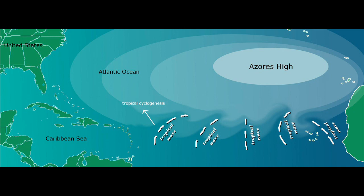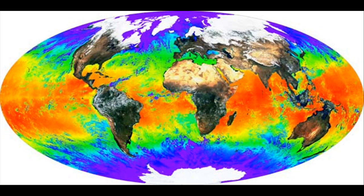Tropical cyclones usually form between latitudes 10 and 30. Above latitude 30, the sea surface temperatures are usually too cold for tropical cyclones to form. And below latitude 10, the Coriolis effect is usually too weak to get the storm to start spinning.